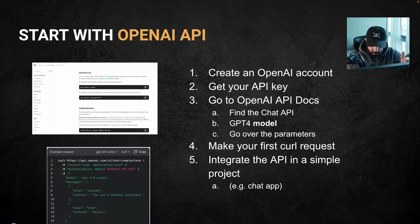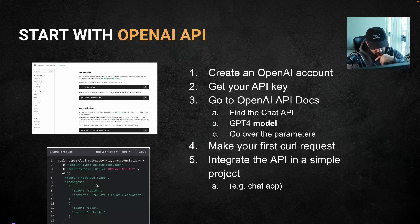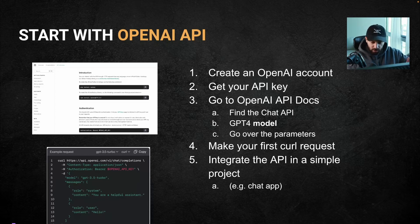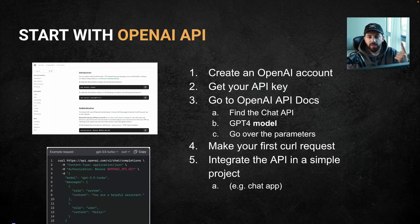Create an OpenAI account, get your API key, and that key gives you access to the API. It doesn't cost much — if you just want to play around and build personal projects, it's like one or two dollars. Go to the OpenAI API docs, check the chat API, look at the model — most likely GPT-4 — go over the parameters, check the examples, and make your first curl request through the terminal. Add your API key, get a result, and that's your first interaction with the OpenAI API. Then take a simple project — one you've already built or a quick chat app — and add an OpenAI API call to it. That will be your very first AI project.